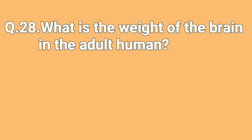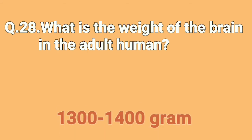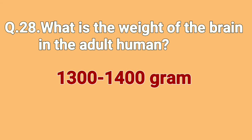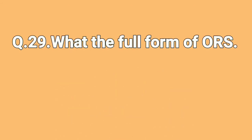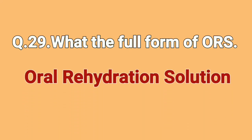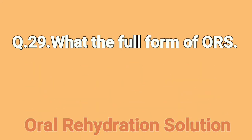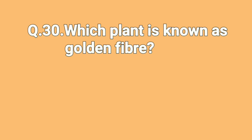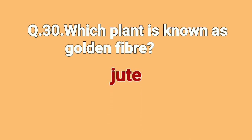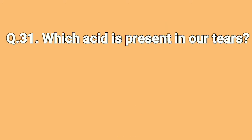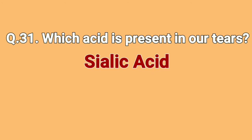What is the weight of the brain in an adult human? 1300 to 1400 grams. What is the full form of ORS? Oral Rehydration Solution. Which plant is known as Golden Fiber? Jute. Which acid is present in our tears? Sialic Acid.